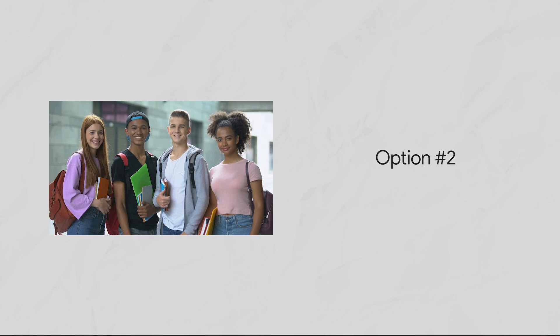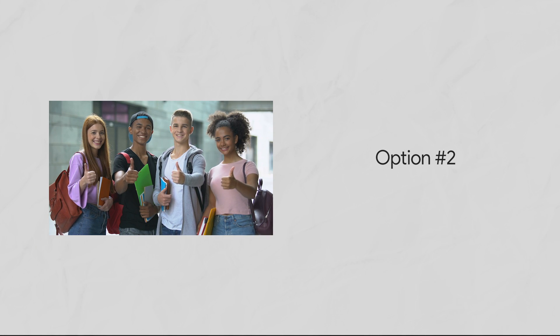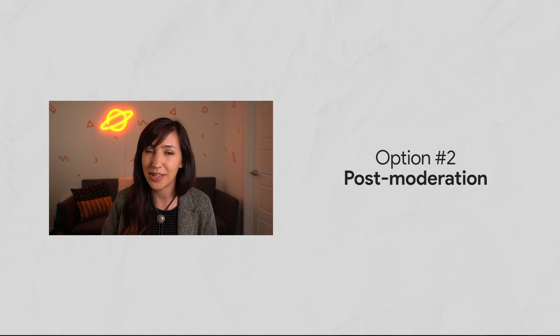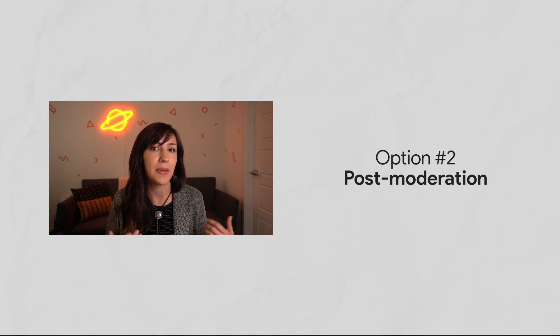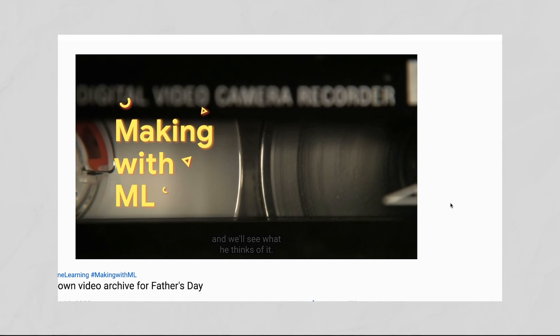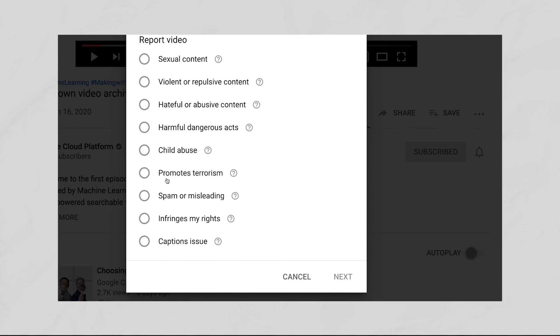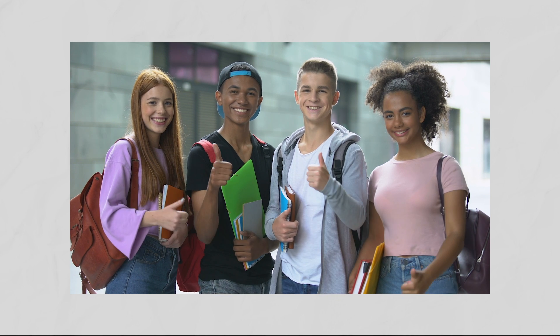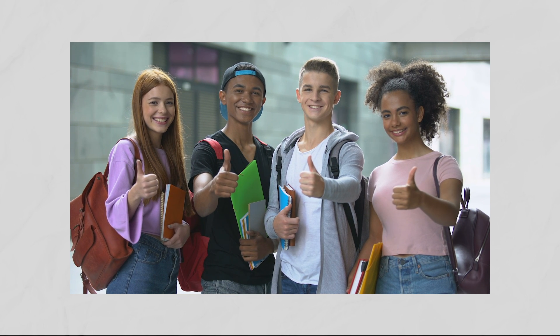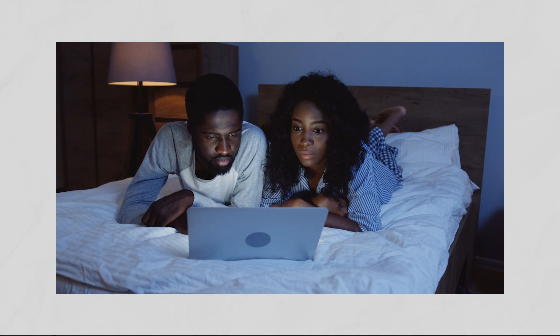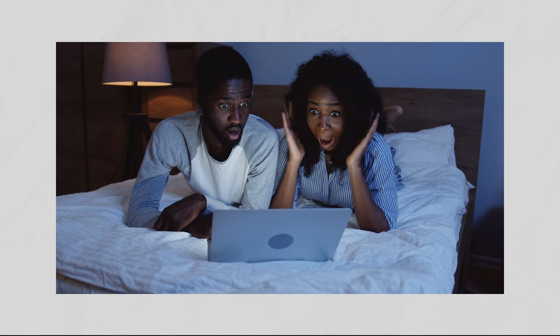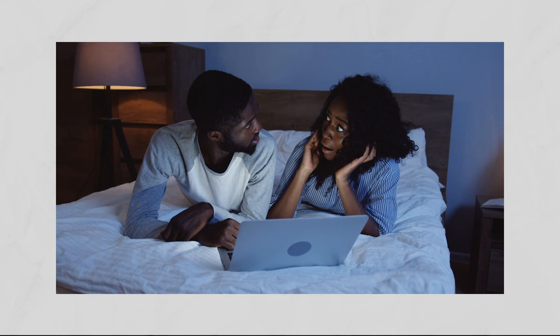Option number two: you could ask your users to flag bad content for you and then send this flagged content to a human moderation team for later review, maybe in a priority queue where they figure out what's important to review first. This is called post-moderation because the content is moderated after it's already been posted. For example, when you're served a YouTube video or a Google ad and you have the option to report that content, you're seeing a post-moderation strategy. The advantage is that it allows your human moderation team to scale, but the disadvantage is that your users have to actually see this potentially offensive content, which in some instances would be unacceptable.